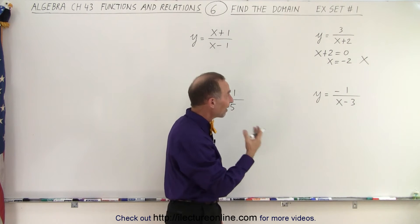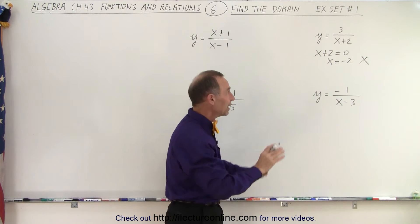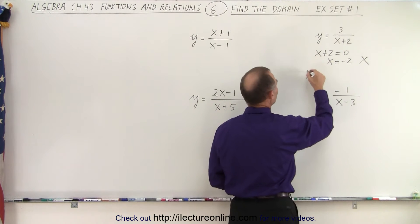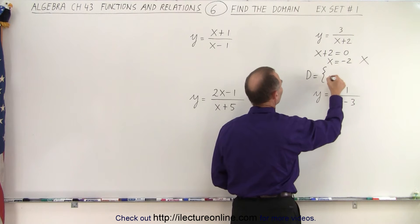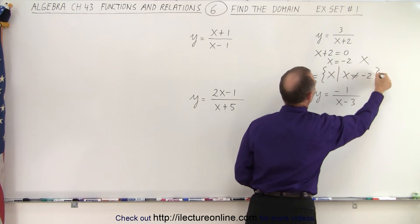We set the denominator equal to zero. We find the value for x that makes it equal to zero. That's the value that x cannot be, and therefore we can say that the domain is equal to the set of all x's such that x is not equal to negative two.